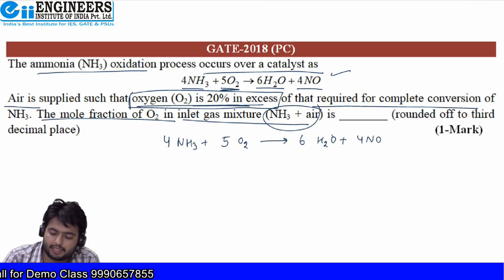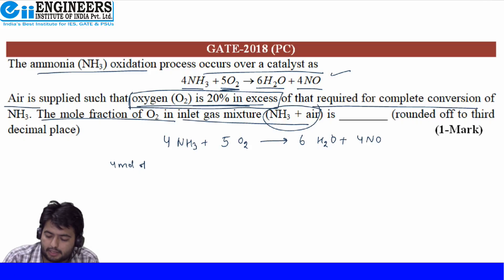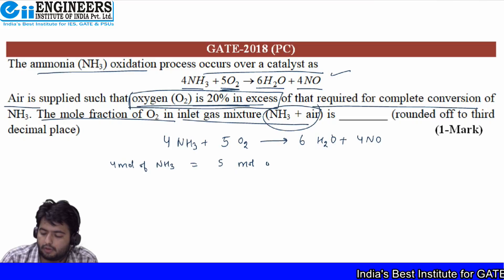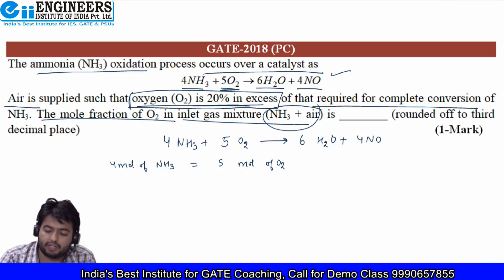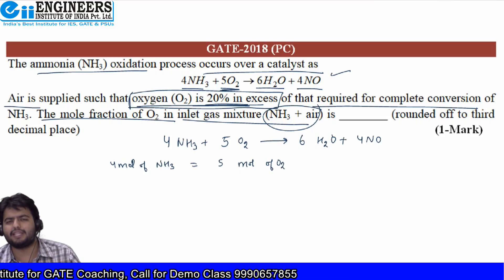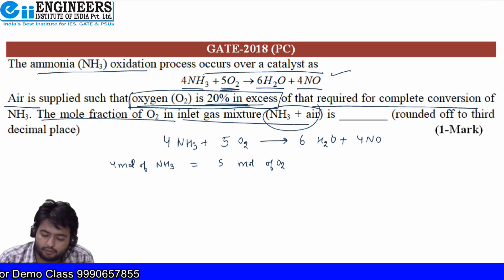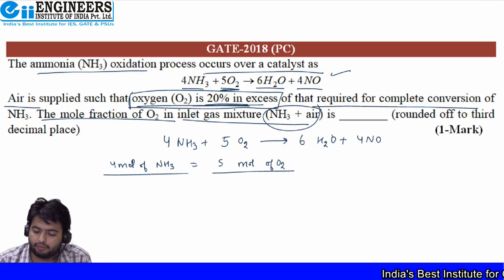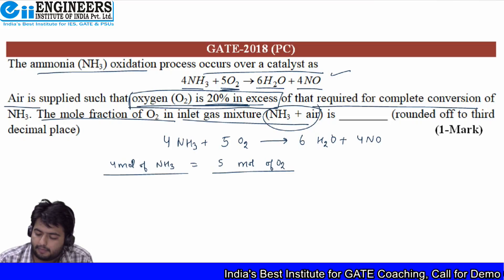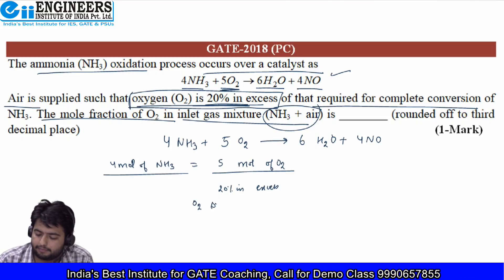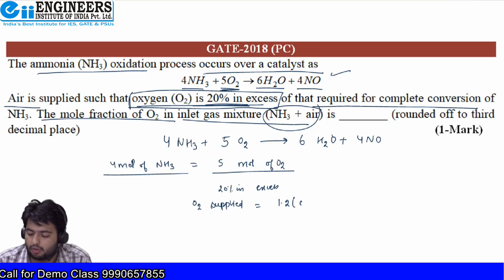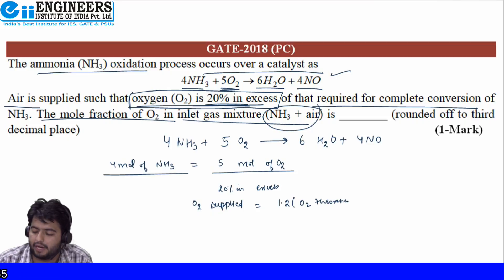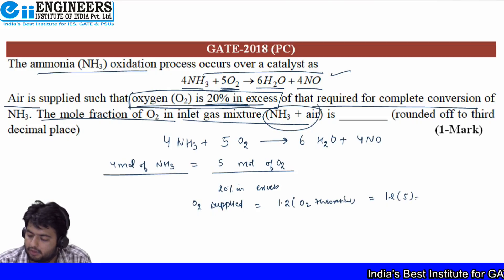From the stoichiometry we can see that four moles of ammonia react with five moles of oxygen. It is said that we have supplied oxygen in 20% excess. Let's take four moles as the initial basis so that the initial analysis is easy — four moles of NH3 is taken as our basis. According to stoichiometry, five moles of oxygen should be supplied, but we supply 20% in excess.